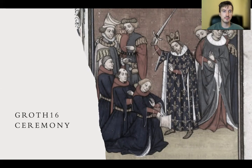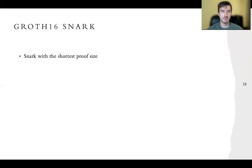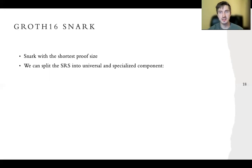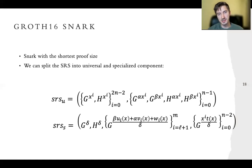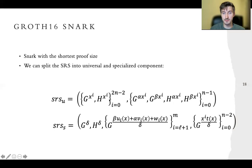Now let's look at what the ceremony protocol of Groth16 roughly looks like. Groth16 is one of the protocols with the shortest proofs so far, and we can split the SRS into a universal part and a specialized part. Here G is the generator of one of the pairing groups and H is the generator of the other pairing group, and X is some integer which is a trapdoor — so X, alpha, and beta are actually the trapdoor. The universal SRS has essentially monomials in the exponent, whereas the specialized SRS has much more complicated polynomials.